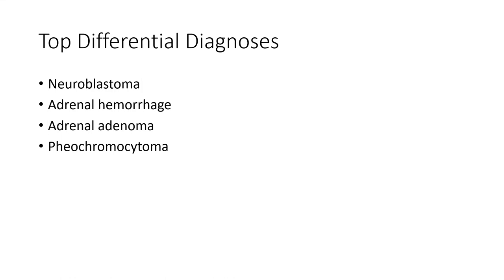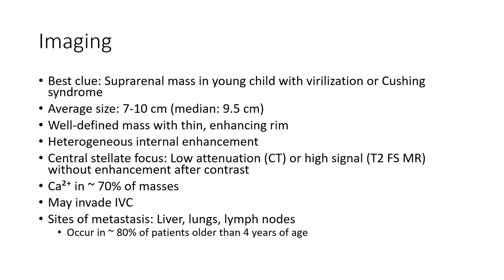Top differentials include neuroblastoma, adrenal adenoma, and pheochromocytoma. Imaging best clues: suprarenal mass in young children with virilization or Cushing syndrome. Average size is 7 to 10 cm. Features include a well-defined mass with thin enhancing rim, heterogeneous internal enhancement, central stellate focus of low attenuation, high T2 signal, without enhancement after contrast.